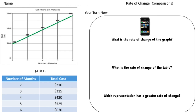Welcome back. For this problem you had to solve a problem involving cell phone bills. The line graph shows the cell phone bill of Verizon and the chart shows the cell phone bill of an AT&T customer. To find the rate of change of the graph, let's use two points: this point has an X value of 2 and a Y value of 190, so we use point (2, 190).